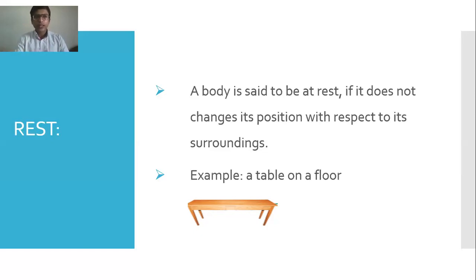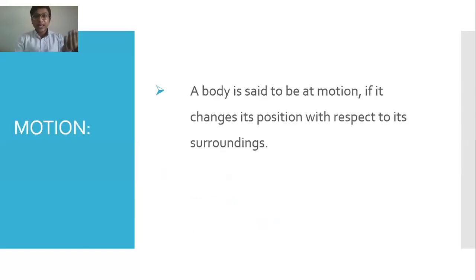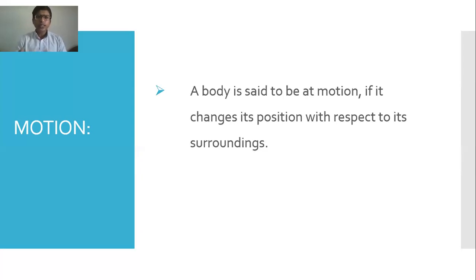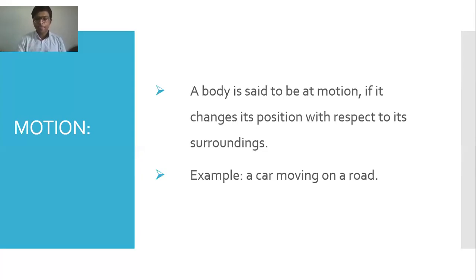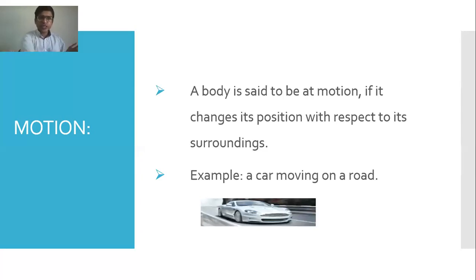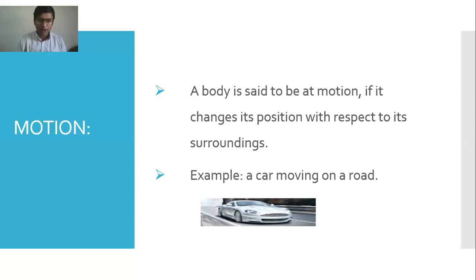The definition of motion is: a body is said to be in motion when it changes its position with respect to its surroundings. A good example is a car moving on a road — it is continuously changing its position. So in summary: rest means a body does not change its position, and motion means a body changes its position with respect to its surroundings.